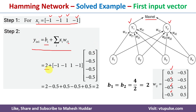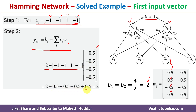The bias is 2. The input vector Xi = [−1, −1, 1, −1] is multiplied by the first column of the weight matrix [0.5, −0.5, −0.5, −0.5]. Computing row times column: (−1)(0.5) = −0.5, (−1)(−0.5) = +0.5, (1)(−0.5) = −0.5, (−1)(−0.5) = +0.5. These cancel out to 0, leaving only the bias of 2. So the net input at Y1 is 2.